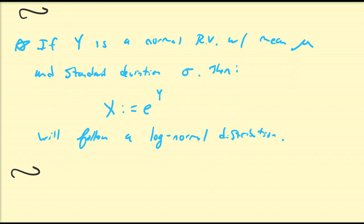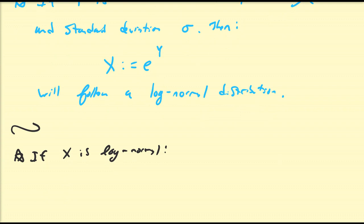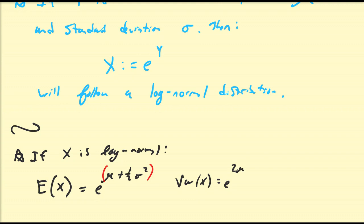A couple properties of this distribution: if x is log normal, then it has a mean and a variance that is related to the mean and the variance of the normal random variable. E of x is going to be equal to e to the power of mu plus one half sigma squared. And the variance of a log normal random variable is going to be equal to e to the two mu plus two sigma squared minus e to the two mu plus sigma squared. I'm not going to go through the proof of these — they require a little bit of algebraic and some calculus manipulations, so I'll just give them to you straight out.